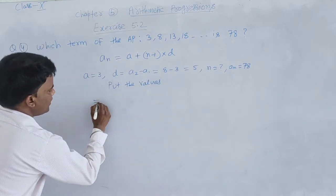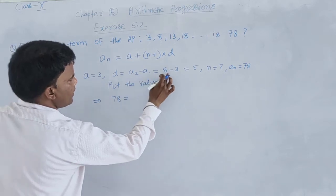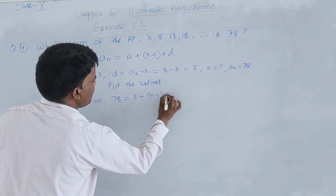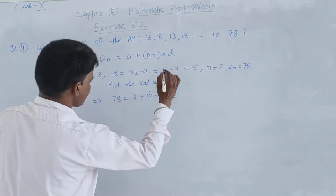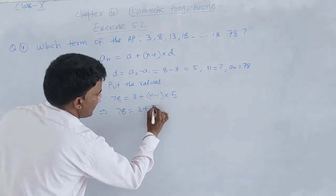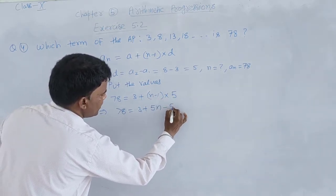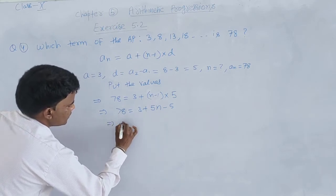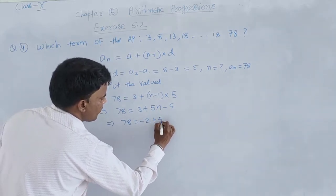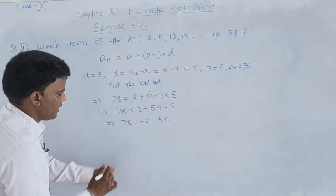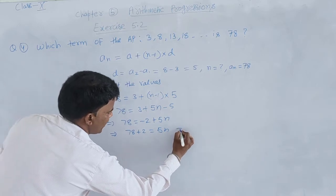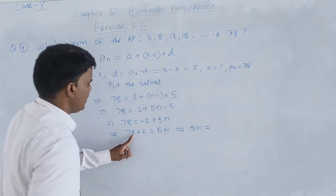Putting in the values: the value of An is 78, equal to the value of a which is 3, plus (n minus 1) multiplied by the value of d which is 5. Simplifying: 78 = 3 + 5n − 5, which gives 78 = −2 + 5n. Transferring −2 to the other side: 78 + 2 = 5n, which implies 5n = 80.